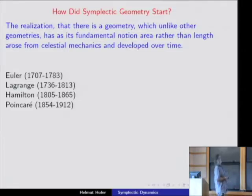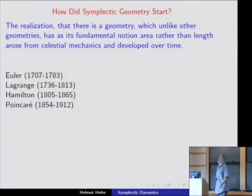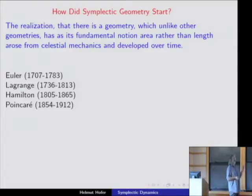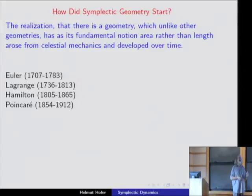How did symplectic geometry start? It started a long time ago but took a long time to develop. Euler was interested in celestial mechanics and invented the restricted three-body problem, where two masses are described and a third is so small it can be disregarded. The two-body problem is integrable — you can write down solutions — and then you describe the smaller body with respect to the system. Euler was also the first to find the Lagrange points.